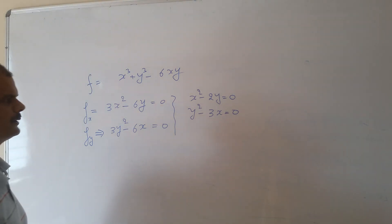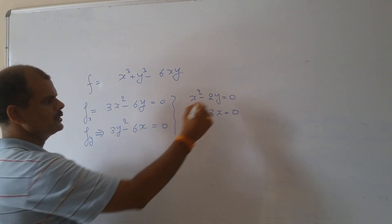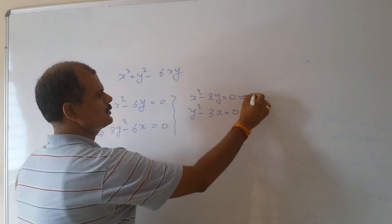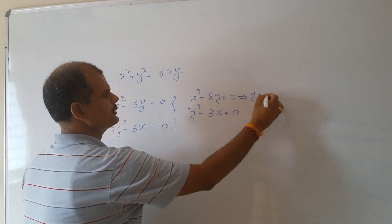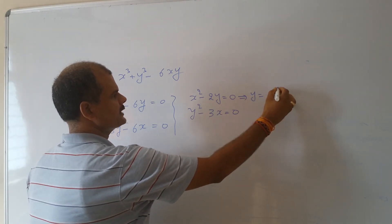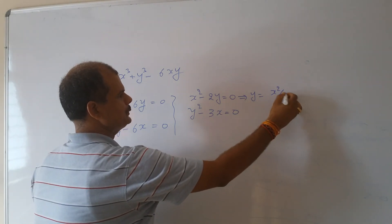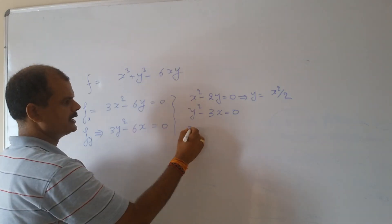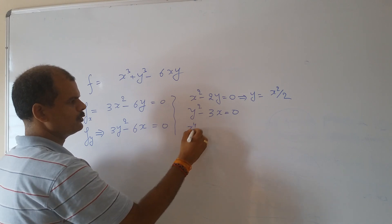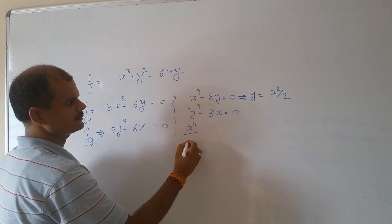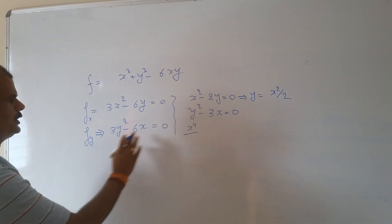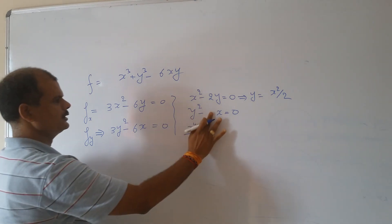We solve this set of equations. From the first equation we get x² minus 2y = 0, and the second equation gives y² minus 2x = 0. From the first equation, y equals x²/2.